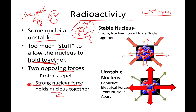If you have a stable atom, the strong nuclear force is strong enough that it overcomes the repulsive electrical force and holds the nucleus together. But some nuclei are unstable, so the electrical force of repulsion is trying to blow apart the nucleus and the strong force is just not strong enough to hold it together forever.